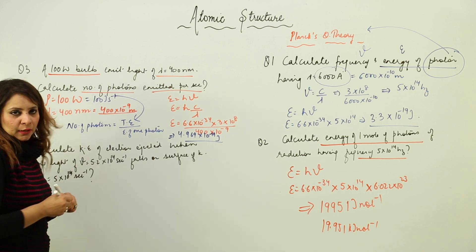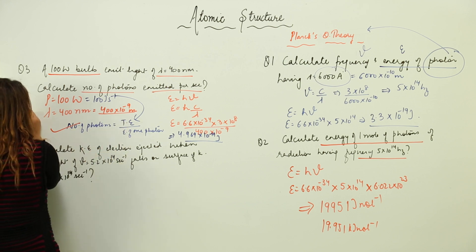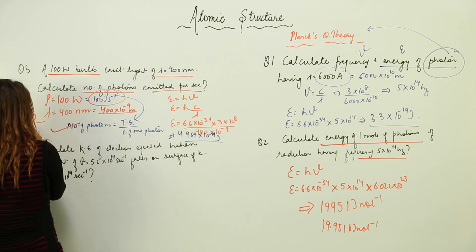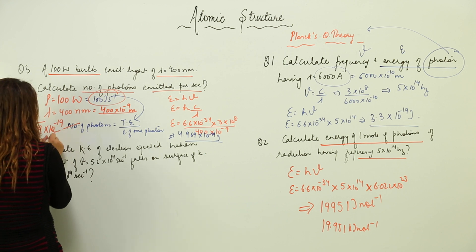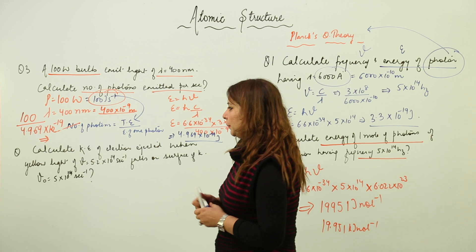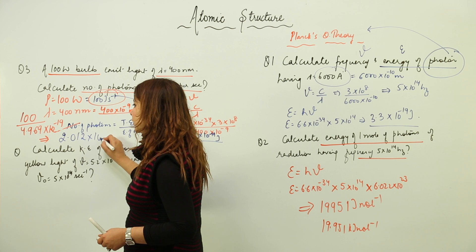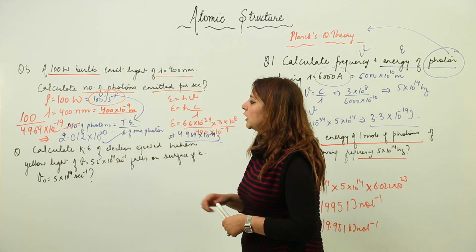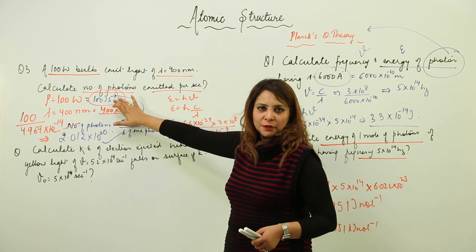Now we find the number of photons emitted. Taking the ratio: total energy (100 J/s) divided by energy of one photon (4.969 × 10⁻¹⁹ J), the answer is 2.012 × 10²⁰ photons per second.